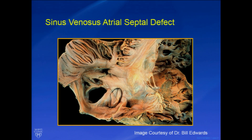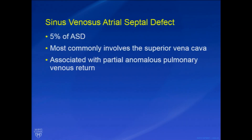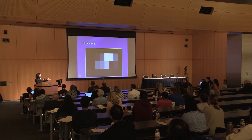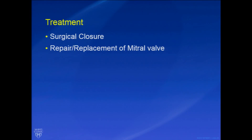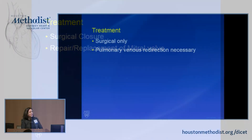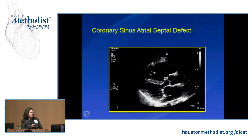Sinus venosus defects are pretty rare — about 5% of ASDs — and are defects where the SVC or IVC joins the right atrium. Virtually all of these patients have anomalous pulmonary venous return as well, which needs to be considered. This defect is not very well seen on transthoracic imaging; we most often have to go to TEE imaging, and we're looking for those right anomalous veins on TEE as well. Treatment is surgical only, except in rare cases where a transcatheter approach is used, and you must redirect the pulmonary veins.